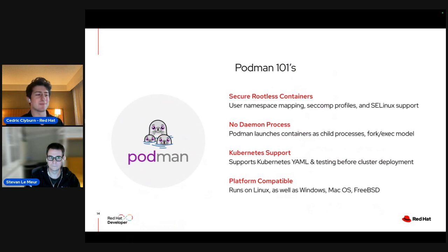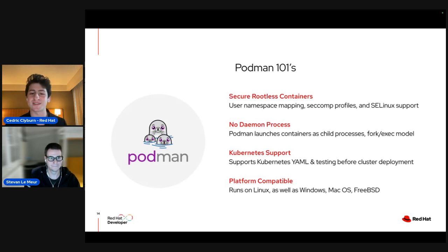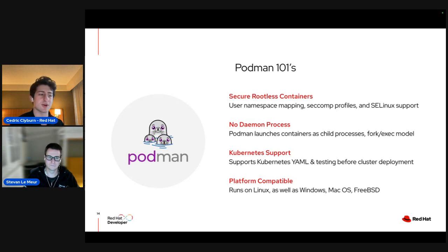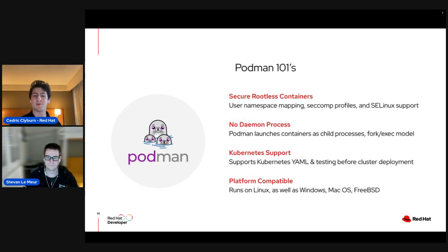Going back to Podman 101s — the most important things are: secure rootless containers mapped on the user's namespace, reducing the attack vector; no daemon process because of the fork exec model; and Kubernetes support because Podman actually came from CRI-O, which is a Kubernetes container runtime. When developing CRI-O, Podman came out of it, and since day one Podman has focused on rootless support and being security-hardened.